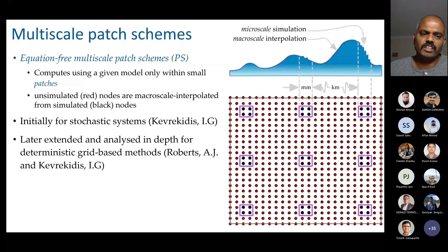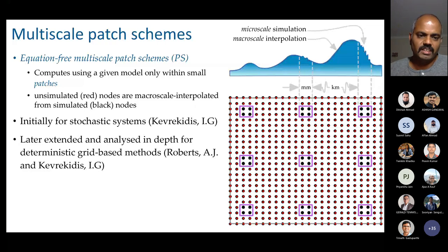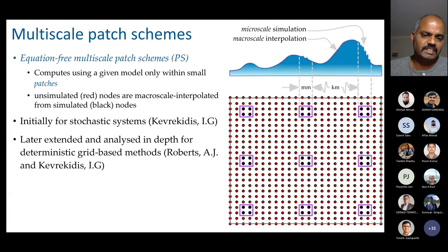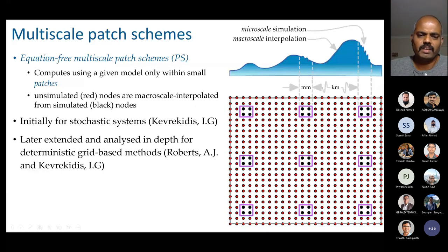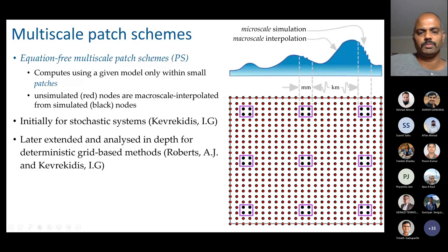The unsimulated nodes are later interpolated for post-processing. These multi-scale patch schemes were initially developed for stochastic systems by Kevrekidis and others at Johns Hopkins University, then later extended and substantially analyzed for deterministic grid-based methods like finite difference methods. Some people have attempted finite element within the patches — primarily two research groups, one being AJ Roberts from the University of Adelaide, my PhD principal supervisor, and IJ Kevrekidis from Johns Hopkins.